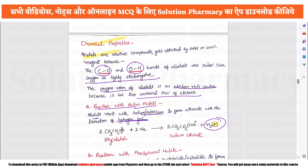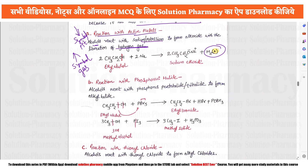When writing reaction equations, an upward arrow indicates release of a gas, and a downward arrow indicates a precipitate. For example, 2 molecules of ethyl alcohol (CH₃CH₂OH) react with sodium to produce sodium ethoxide (CH₃CH₂O⁻Na⁺) and H₂ gas is released.